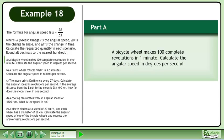In Part A, a bicycle wheel makes 100 complete revolutions in one minute. Calculate the angular speed in degrees per second.